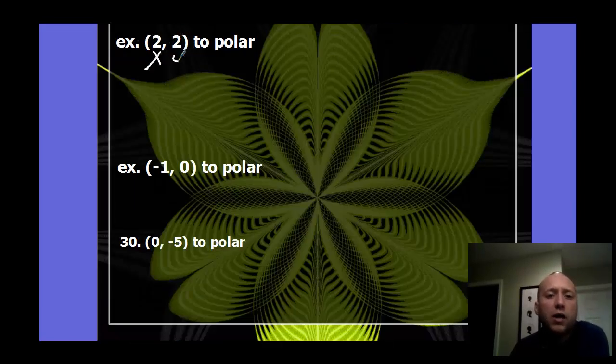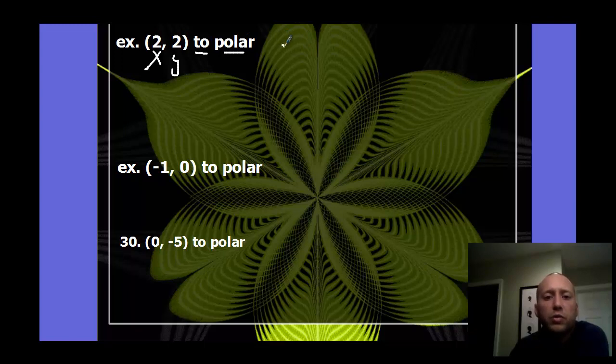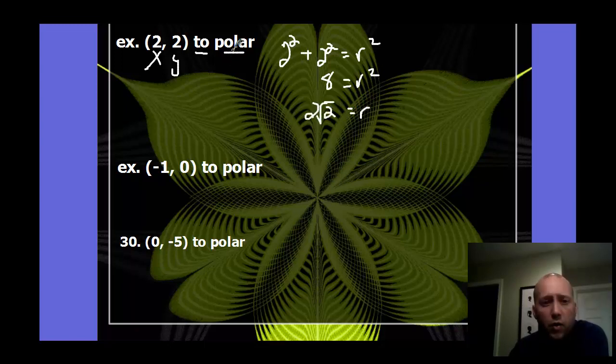If this is x, y, we want to convert to polar. So I can do Pythagorean Theorem. So I can do 2 squared plus 2 squared to equal r squared. So that's 4 plus 4, 8 equals r squared. So by square rooting both sides, r is going to be 2 root 2.